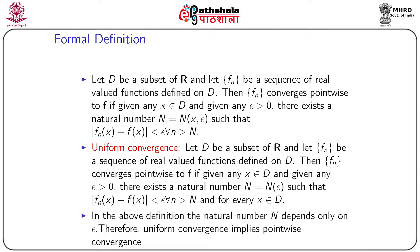There is a similar but stronger notion called uniform convergence. Let d be a subset of ℝ and let fn be a sequence of real-valued functions defined on d. Then fn converges uniformly to f if, given any ε > 0, there exists a natural number N — which depends only on ε — such that |fn(x) − f(x)| < ε whenever n > N and for every x in d. Since N depends only on ε, uniform convergence implies pointwise convergence, but the converse is not true.